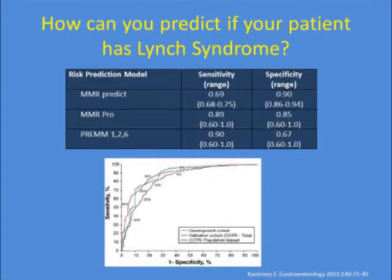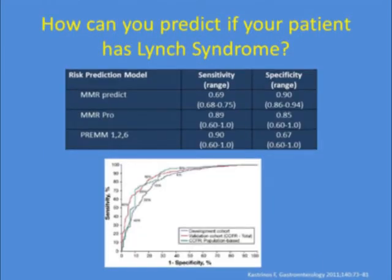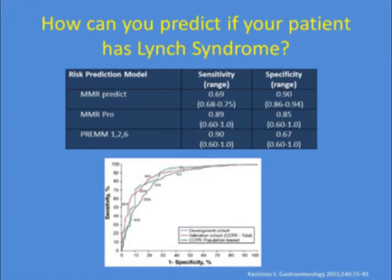Heather reviewed prediction models for Lynch syndrome. The PREMM model is quite simple and available online, with a sensitivity of 90%. It has been validated and is quite useful — individuals with a greater than 5% chance of having a germline mutation should undergo risk assessment and germline testing.